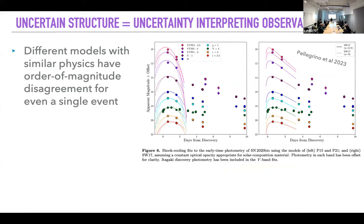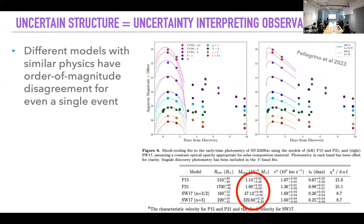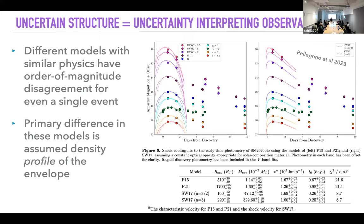For example, for SN 2020bio — a paper by Craig Pellegrino — fitting different analytic models to the light curve: just looking at the bottom two, which have the exact same physics but two different density profiles, one predicts an envelope mass of ~0.4 solar masses, the other ~3 solar masses. So depending purely on the assumed density profile, you get wildly different physical parameters. The primary difference is the density profile.